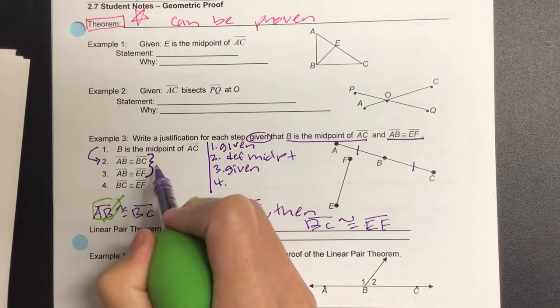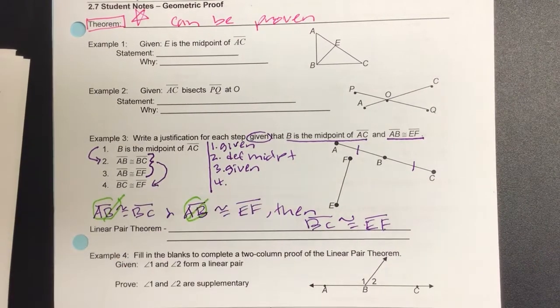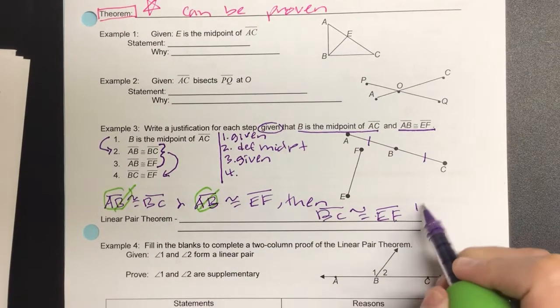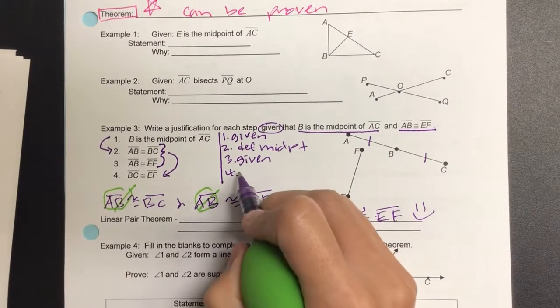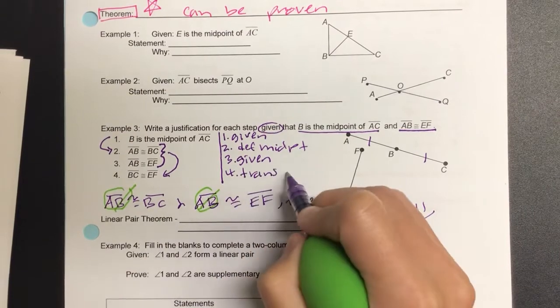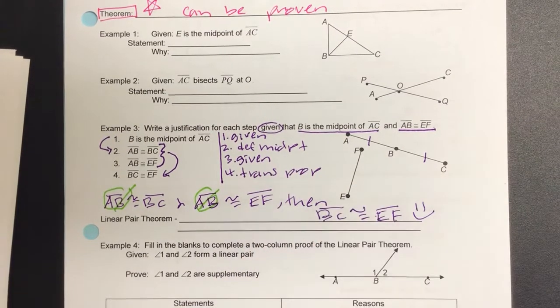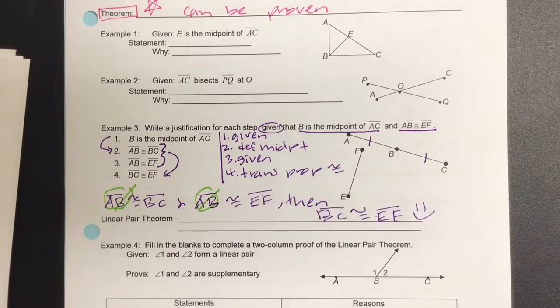Statement number four: do I see BC is congruent to EF? So what property did we just apply? Transitive property of equality or congruence.